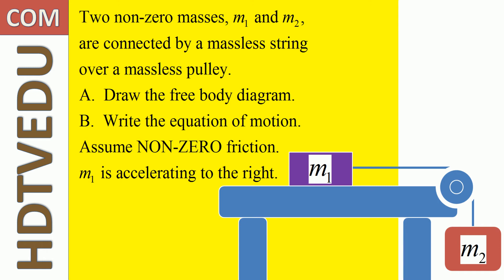Two non-zero masses m1 and m2 are connected by a massless string over a massless pulley. Draw the free body diagram, write the equation of motion, and assume non-zero friction.